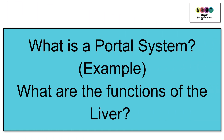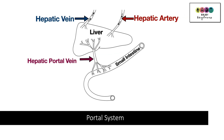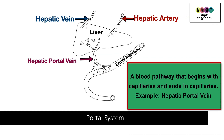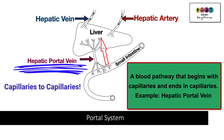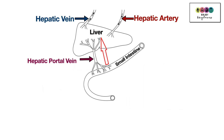We'll start with what is a portal system and give an example of it. A portal system is a blood pathway that begins with capillaries and ends with capillaries, and the hepatic portal vein is the common example we use. It carries blood rich in nutrients from the small intestine to the liver.